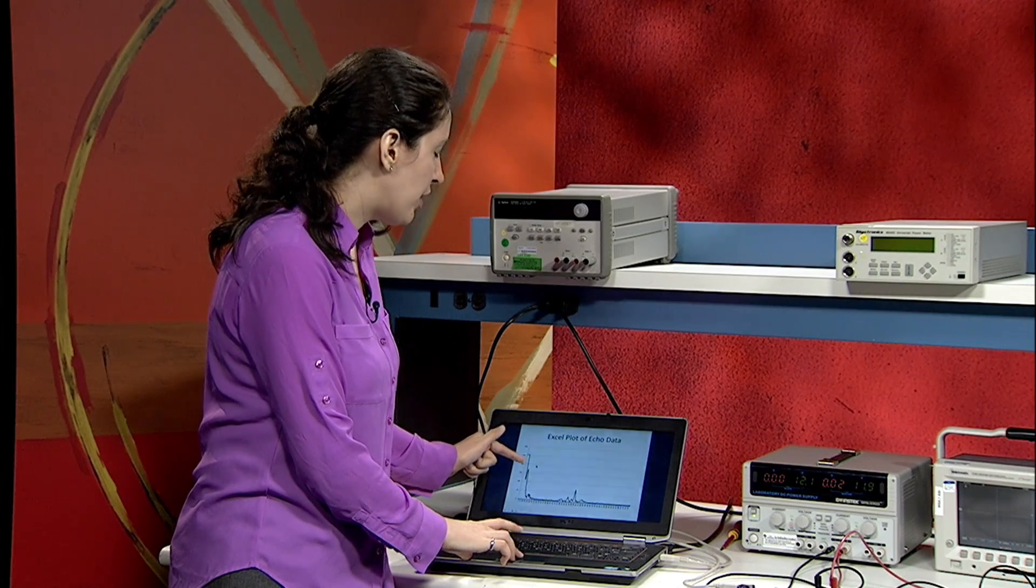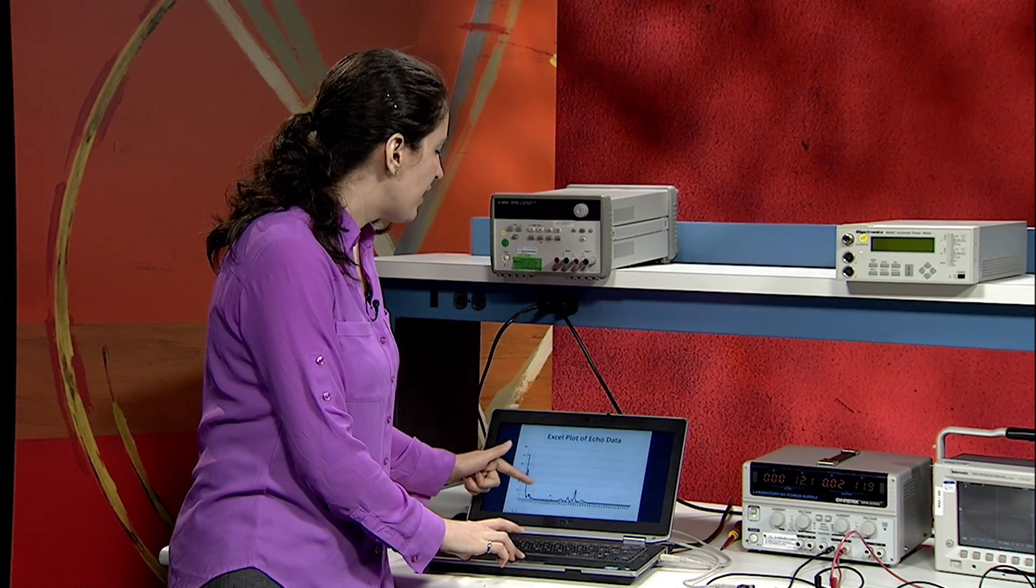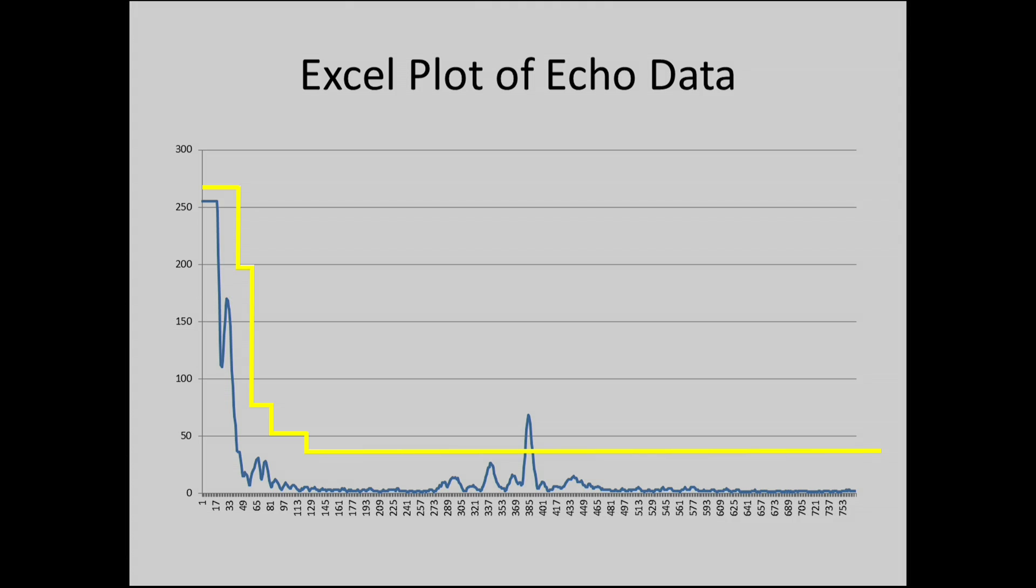So if you plot the threshold on here, you would want the first instance where the echo data crosses the threshold to signal that that's where an object is. So in this case, if we set the threshold to be about 30 or so, you would see that it would trigger where we want it to.